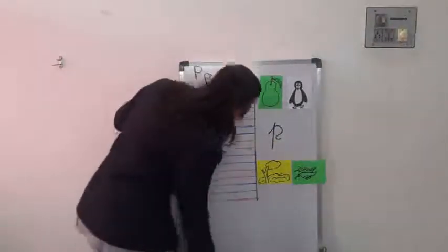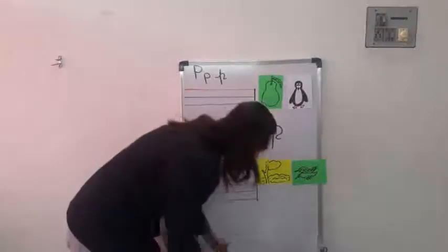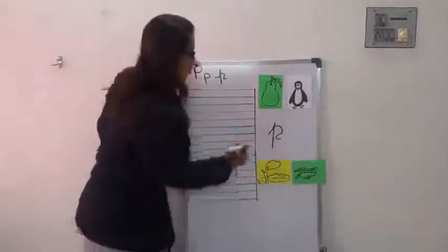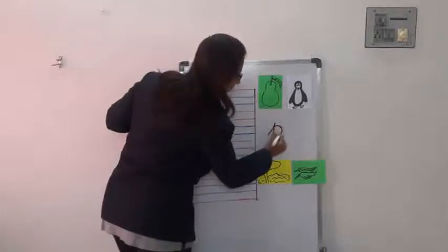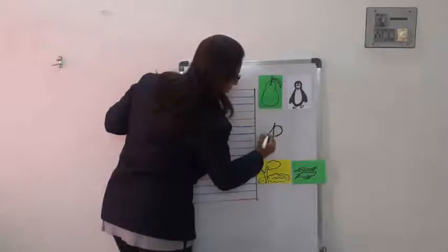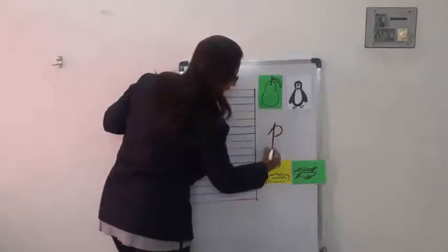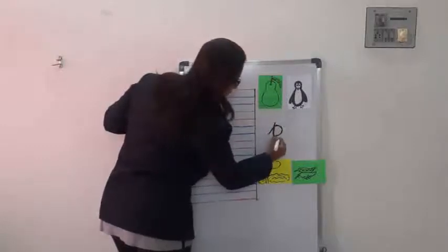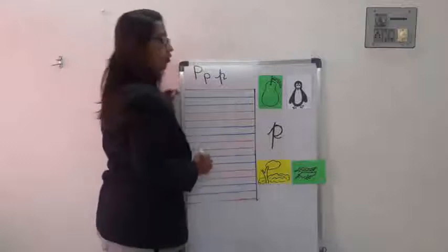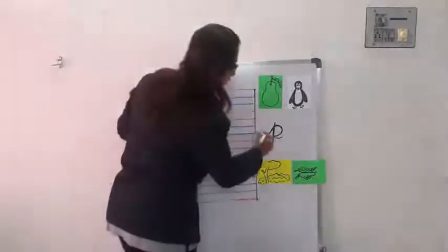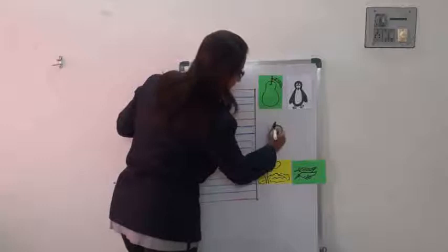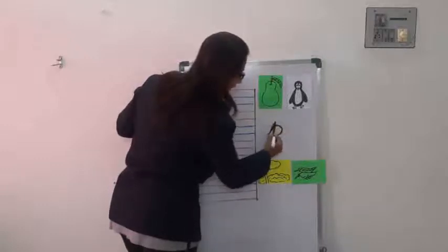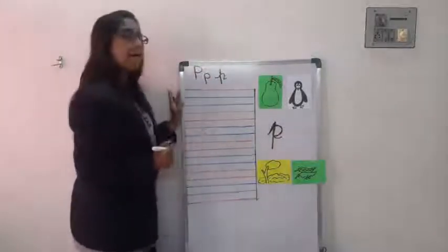Now slanting line, standing line. Bring it up the whole line, and up again. P for pass. Slanting line, standing line. Then make the P. Good.